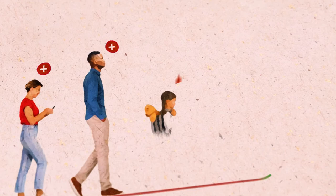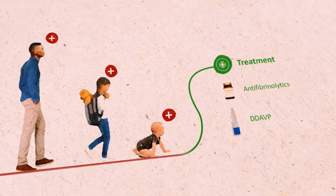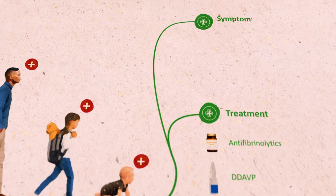After diagnosis, the haematologist will start treatment with anti-fibrinolytics, DDAVP, and/or Von Willebrand factor replacement therapy.